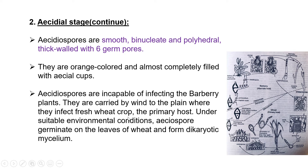Aecidiospores are incapable of infecting barberry plants; they are carried by wind to the plains where they infect fresh wheat crop — the primary host. Under suitable environmental conditions, aecidiospores germinate on the leaves of wheat and form dikaryotic mycelium, thus completing the cycle. The cycle then continues: uredospores and teliospores are formed, then haploid nuclei in the promycelium and two strains combine to form basidiospores, and pycnidiospores are formed again.